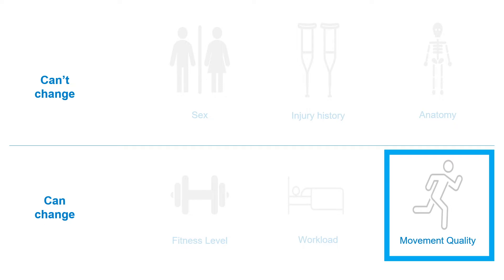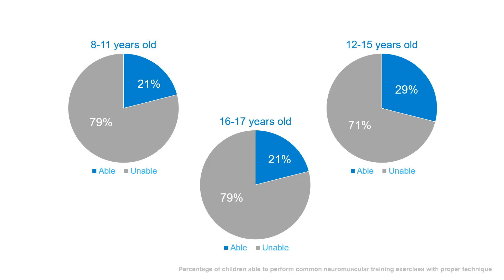Remember, these are the things about a person that can be changed. The way that children move when they jump and land, or change speed and direction when they are running, is the modifiable injury risk factor that physical educators have the greatest opportunity to influence. The joints of the upper and lower body should be aligned and stabilized throughout any sport or physical activity, but children aren't typically taught how to perform these movements with proper technique.